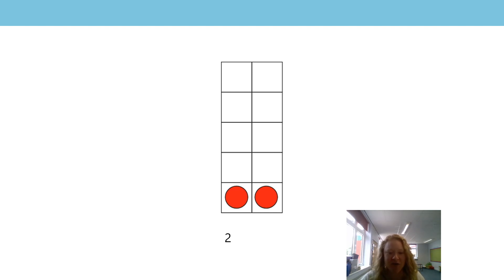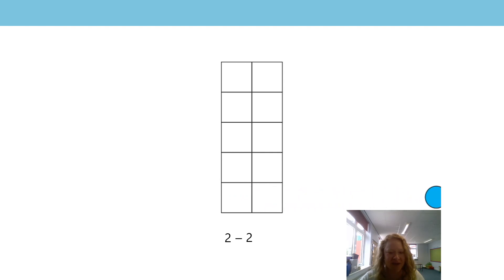Do you know which even number is previous? There we go — it's two. Well done. And our last one: we've only got two now and we're going to take away two. There they go. What are we left with? Zero — there's nothing left.